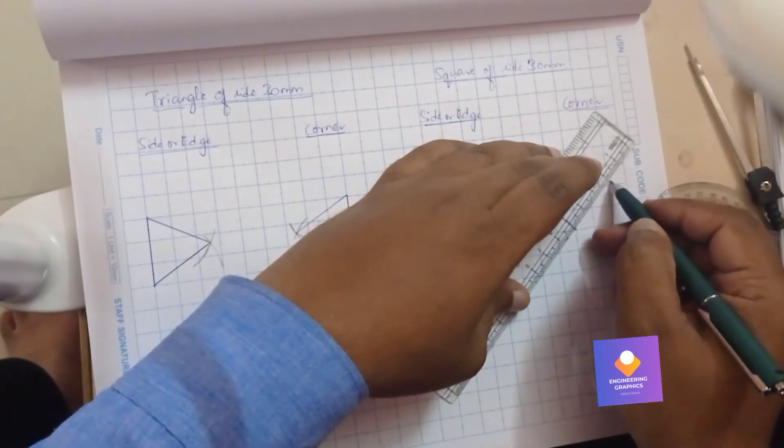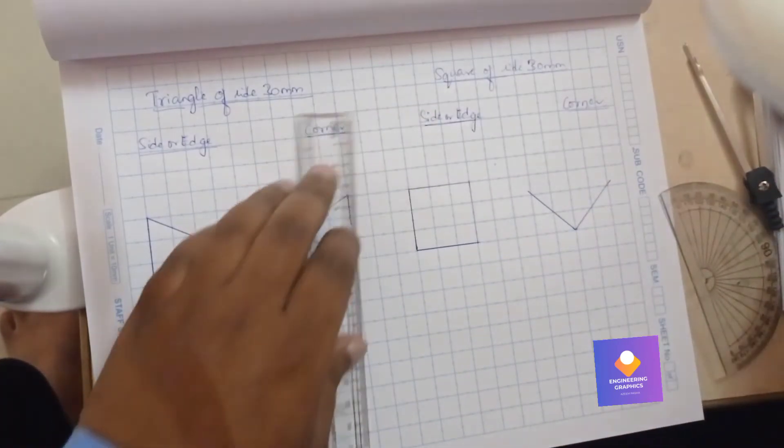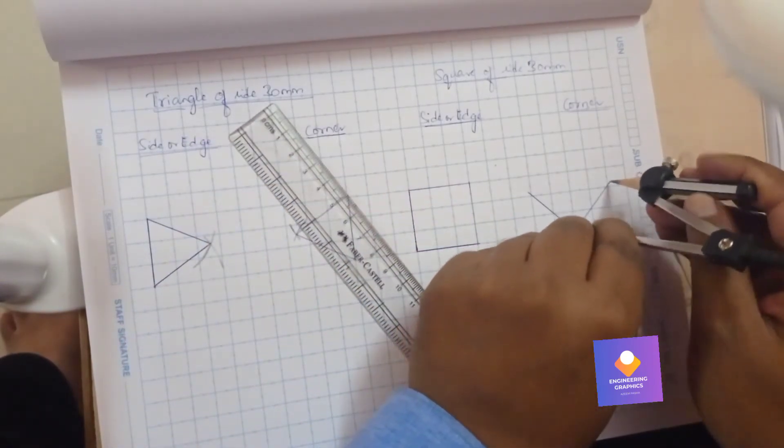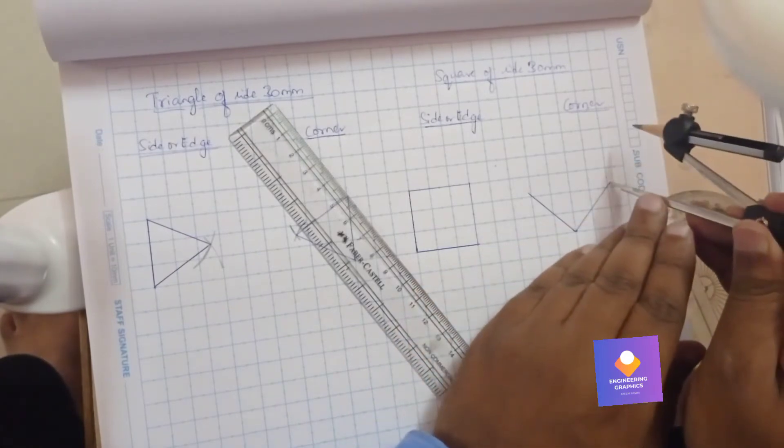Then after that we will take the compass, we will measure 30 mm. Okay, we already measured.